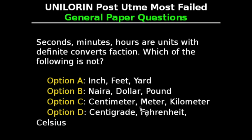General Paper Questions. This question says: Seconds, minutes, hours are units with definite fixed fractions. Which of the following is NOT? Option A: inch, feet, yard. Option B: naira, dollar, pound. Option C: centimeter, meter, kilometer. Option D: centigrade, Fahrenheit, and Celsius. The correct answer is Option B, naira, dollar, pound.